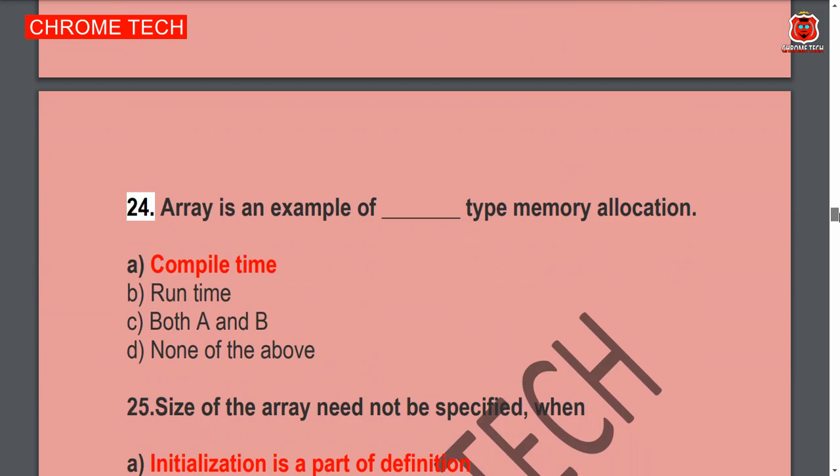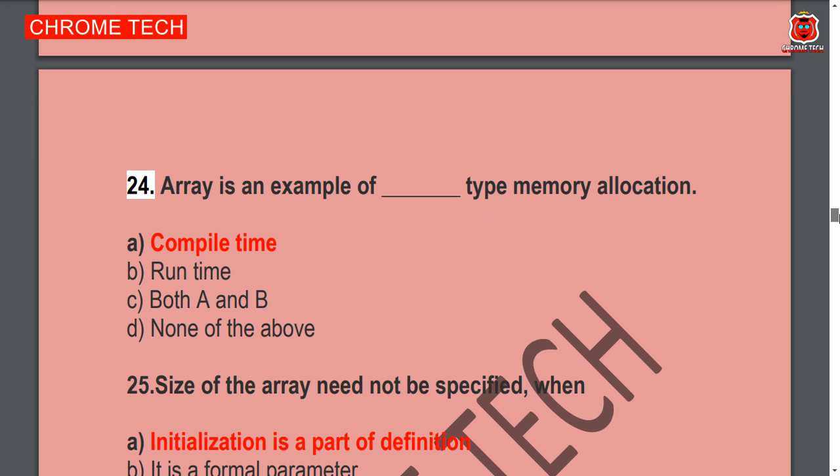24th question: An array is an example of — what type of memory allocation? Compile time. Option A is the correct answer.